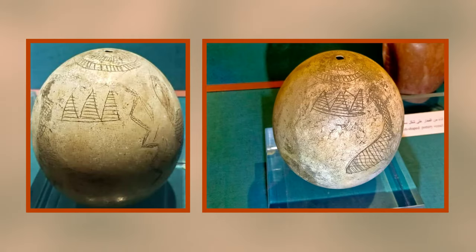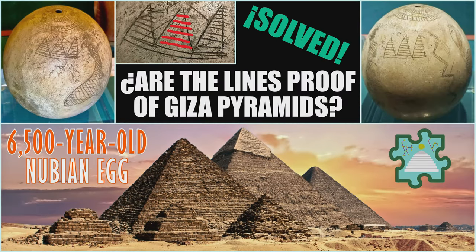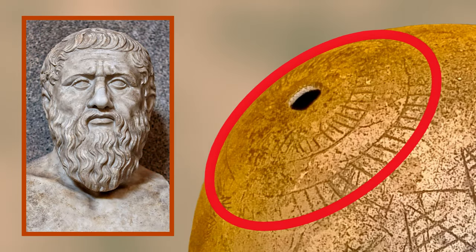Hi everyone! This is the second and probably the last video on the Nubian egg. In the previous upload, I only discussed the possibility that the triangles were pyramids, and it's highly recommended that you watch it after this one. The present video is about the rings with lines, and we'll check the most important aspects of the Atlantis story by Plato.